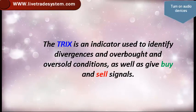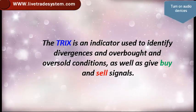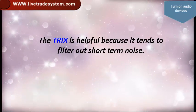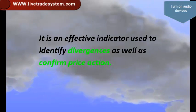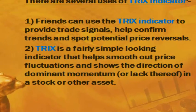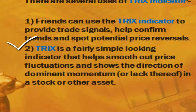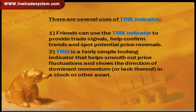TRIX is an indicator used to identify divergences and overbought and oversold conditions, as well as give buy and sell signals. It is helpful because it tends to filter out short-term noise, and it is an effective indicator used to confirm price action. Traders can use TRIX to provide trade signals, confirm trends, and spot potential price reversals. It is a fairly simple-looking indicator that helps smooth out price fluctuations and shows the direction of dominant momentum in a stock or other asset.